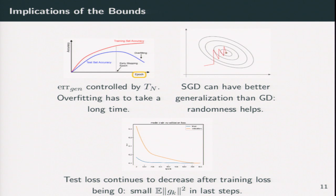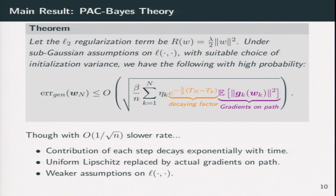And the second thing is that people found in experiments that SGD can generalize better than gradient descent. And it seems that the randomness helps. Although we do not directly analyze SGD, we analyze SGLD, but it provides similar intuition. And the last thing is that test loss can continuously decrease even if the training loss becomes zero. This might be because in our PAC-Bayes bound, the gradient norm of the few last steps can be even smaller.